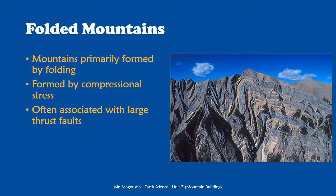With folded mountains, we often see rock layers folded and then thrusted one on top of the other with thrust faults. We see these at places where we have lots of compression — lots of force pressing rocks together — which sounds like continental-continental convergent boundaries. That's where we're generally going to see these types of mountains.